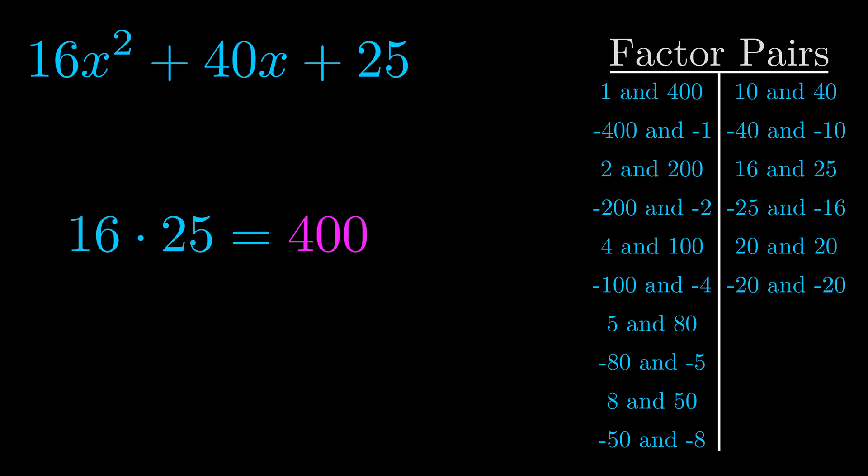The b value is the coefficient on the x term. That's the middle term, the one that we haven't done anything with yet. And really this is the only factor pair that we need.